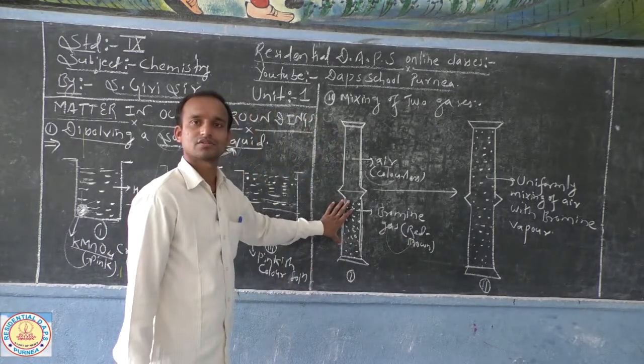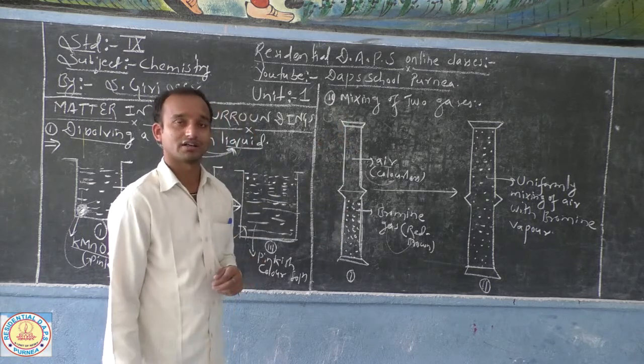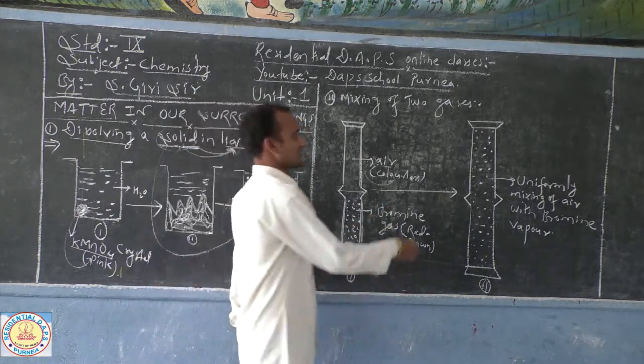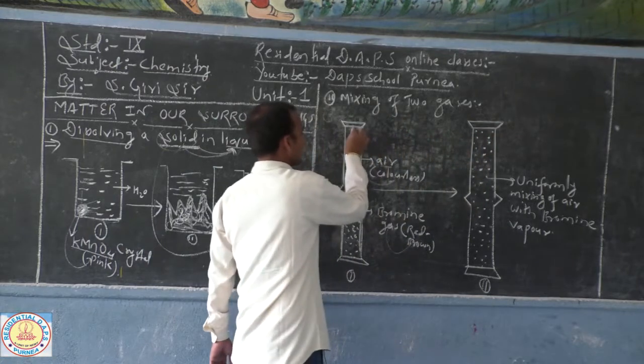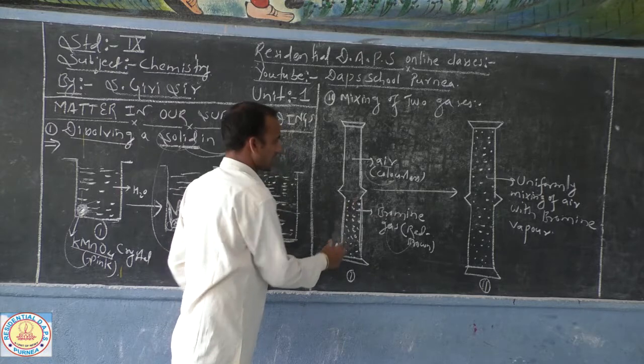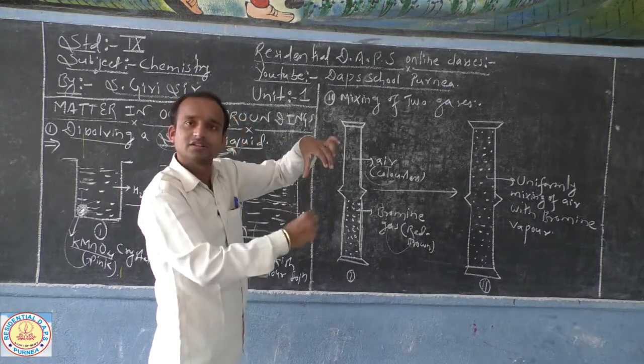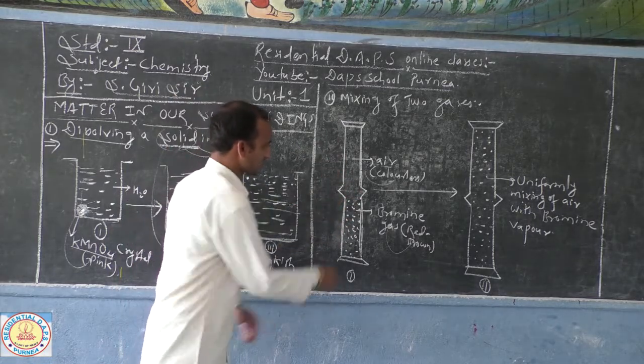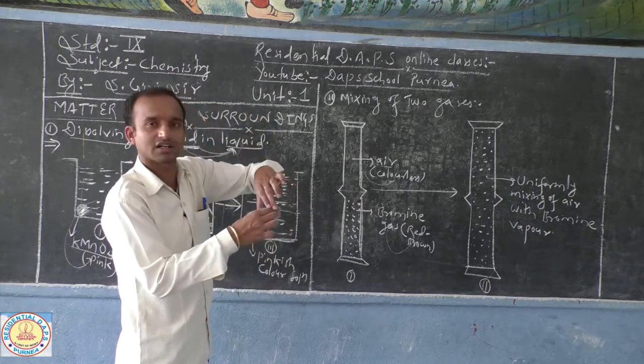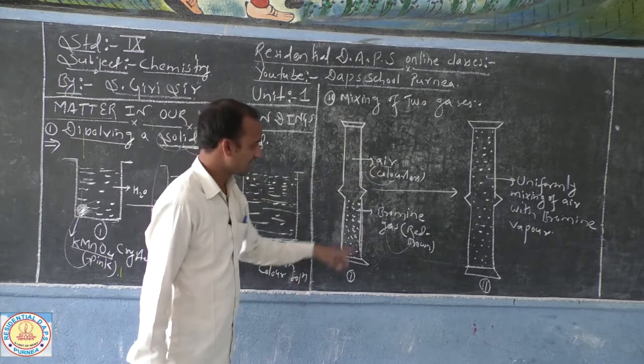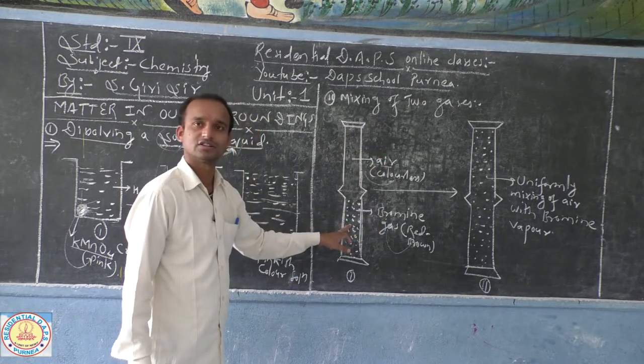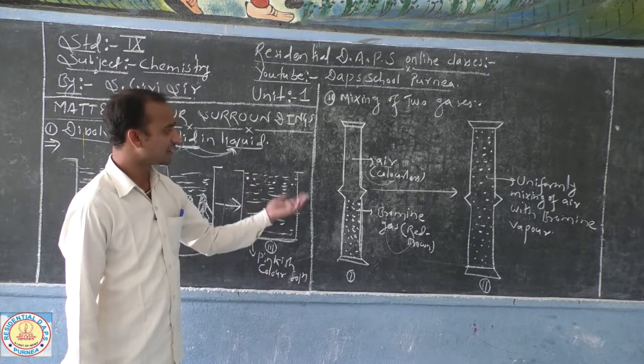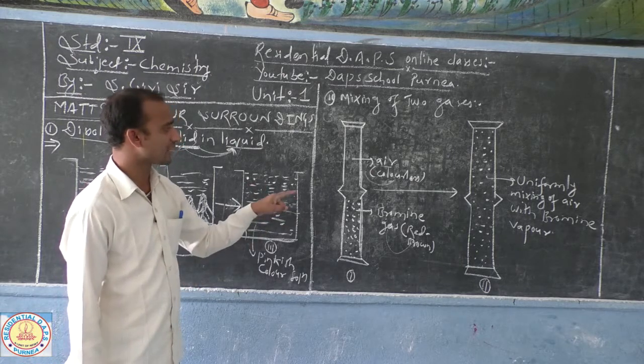Even though bromine gas is heavier than air, after a few minutes you will see that red-brown color of bromine gas uniformly mixes with air. There is an opening system here for mixing. There is no blockage in between the both gas jars. They are inverted, placed one above the other. Air is also gas and bromine is also gas, but bromine has color. We are using the colorful gas so that we can easily see, we can easily identify the diffusion of bromine gas in air.